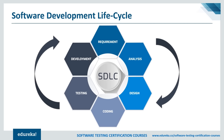Moving to the design phase, it has two steps: high-level design and low-level design. High-level design gives the architecture of the software product to be developed and is done by architects and senior developers. Low-level design describes how each feature and component should work. The outcome from this phase is the high-level document and low-level document, which serve as inputs to the next phase.